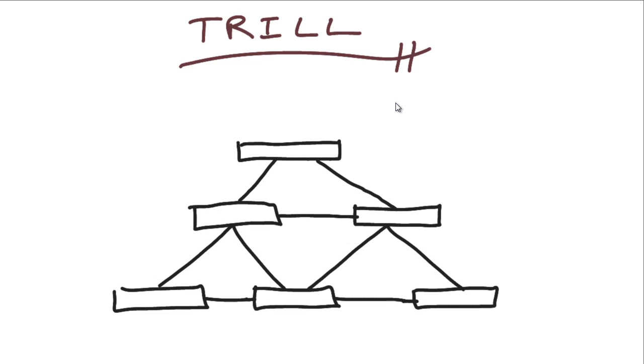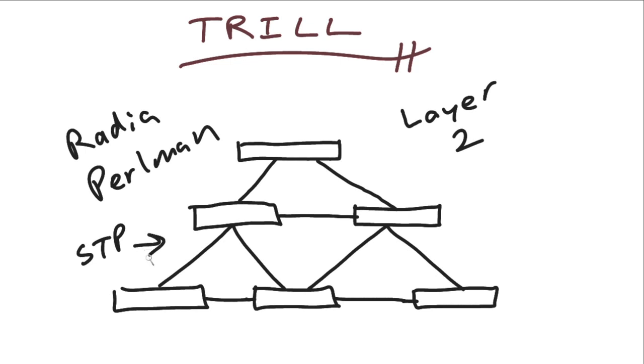In order to understand TRILL, we need to go on a little history lesson. In layer 2 networks, we had a brilliant woman named Radia Perlman who invented something called Spanning Tree Protocol for these layer 2 domains. We want redundant paths in the layer 2 domain, and Spanning Tree Protocol was wonderful at the time. It would go in and dynamically block particular links so that there would not be loops in the topology.